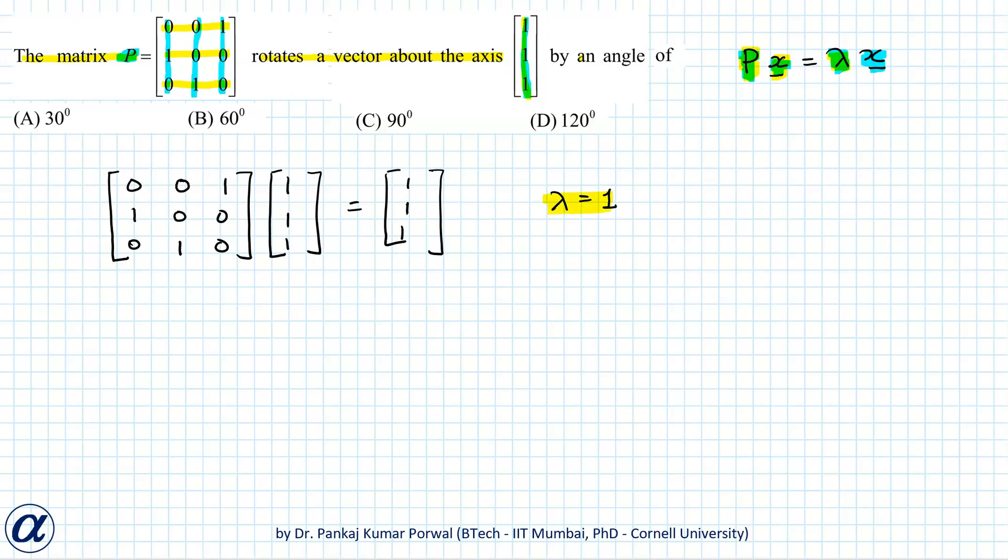Now if we want to find the angle of rotation for this matrix P, then we can take any vector which is perpendicular to this axis of rotation and pre-multiply that with matrix P, and then find angle between original vector and the rotated vector and that will be the angle of rotation corresponding to our matrix P.